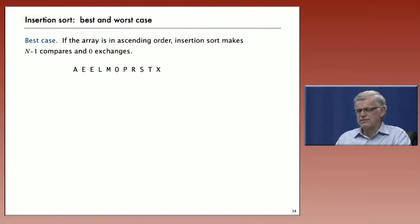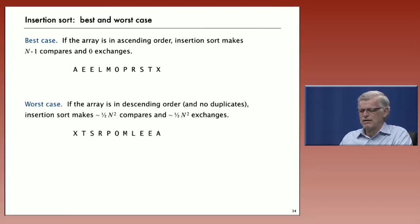Now, insertion sort does depend on the initial order of the data. Let's look at the best case and the worst case, which are certainly outliers. If the array happens to be already sorted, all insertion sort does is really validate that each element has got a smaller element to its left, so it does no exchanges. It gets the sorting job done with just n minus 1 compares. On the other hand, if the array is in descending order and there's no duplicates, then every element goes all the way back. It makes n squared over 2 compares and n squared over 2 exchanges.